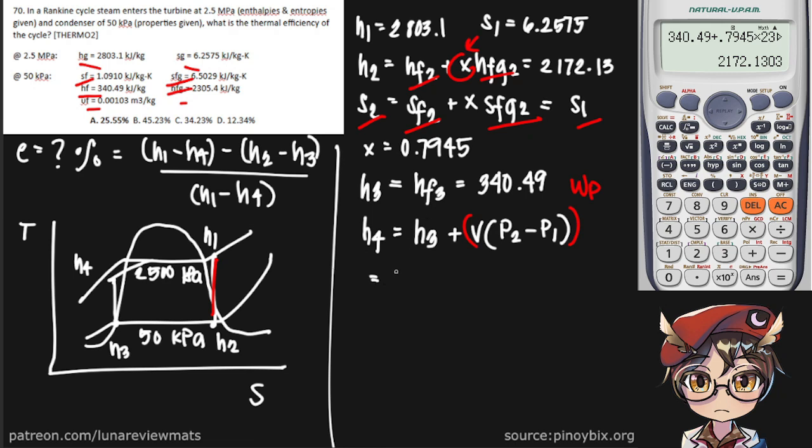Okay. So H sub 3 is 340.49. And our specific volume is given here. Let's actually compute for the pump work directly in our calculator. And make sure the pressure difference is in the same unit, in kPa. And that looks like... let's check. It looks correct. So 0.5235, meaning our H sub 4 would be 343.01.